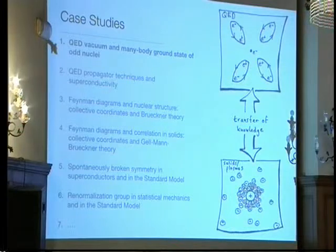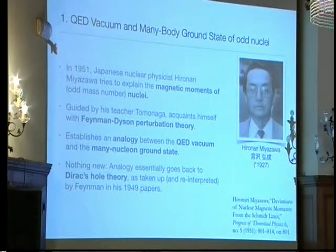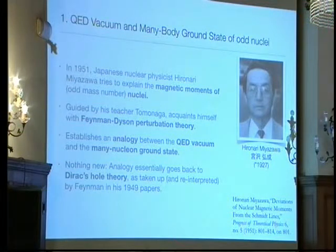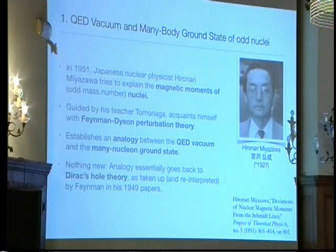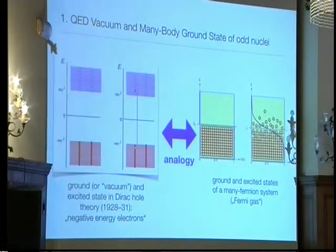Case Study 1: the QED vacuum and the many-body ground state of odd-mass number nuclei. In 1951, Japanese physicist Hironari Miyazawa tries to explain the magnetic moments of odd-mass number nuclei, where deviations from predicted values were observed. Guided by his teacher Tomonaga at Tokyo University, he acquaints himself with the very recent Feynman-Dyson perturbation theory and manages to establish an analogy between the QED vacuum and the many-nucleon ground state. This analogy essentially goes back to Dirac's hole theory as reinterpreted by Feynman in his 1949 papers.